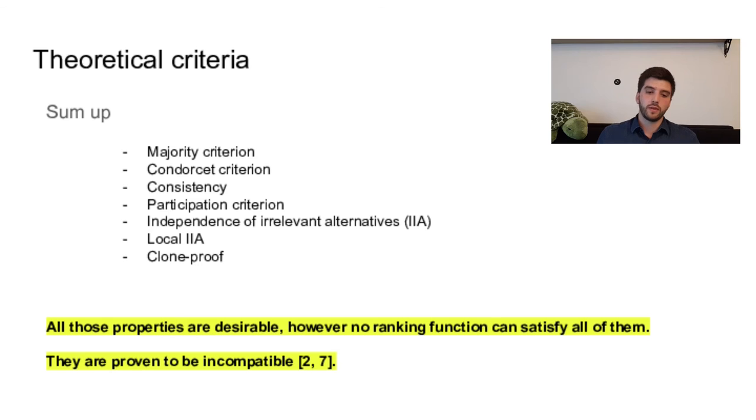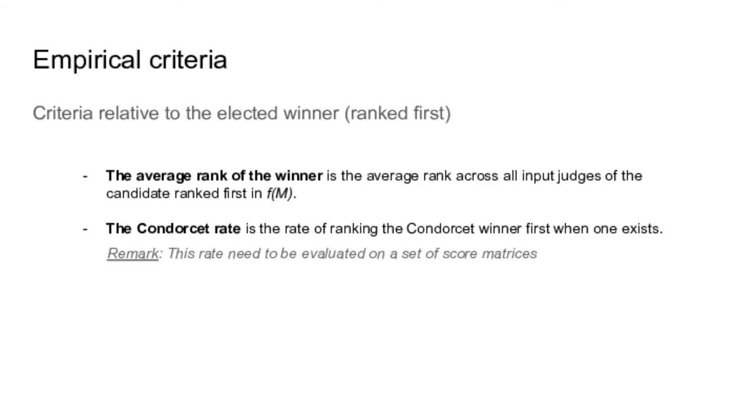So to evaluate this, we propose new criteria that are more practical. So we have empirical criteria relative to the candidate ranked first. So we can look at the average rank of the winner on the ranking of the judges. We have also the Condorcet rate, which is a direct empirical equivalent of the Condorcet criterion. So it's just the rate of ranking the Condorcet winner first when one exists. So you take a set of score matrices and you check if the candidate ranked first by your ranking function is the Condorcet winner or not.